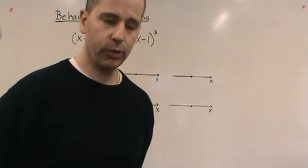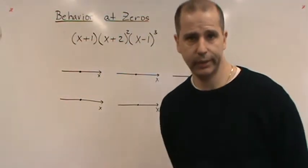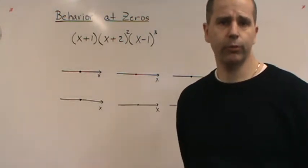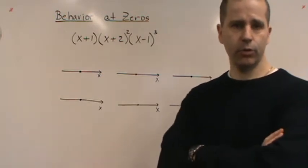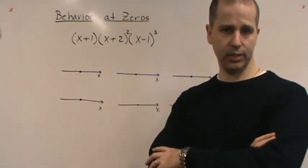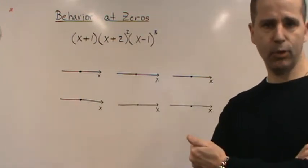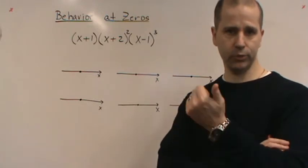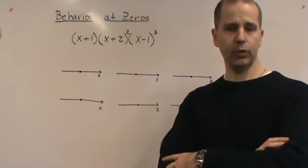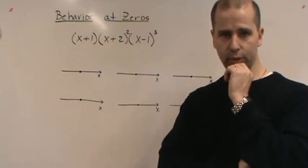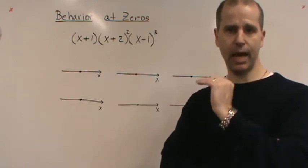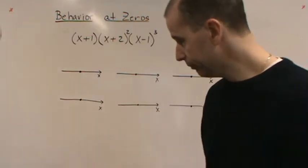Welcome back. Today we're going to cover another topic in this chapter — the topic is behaviors at zeros. We know from previous videos that zeros are where the graph crosses the x-axis, the x-intercepts. We know how to find zeros using factoring, quadratics, the factor theorem, the remainder theorem, and the fundamental theorem of algebra. Now we're interested in what these look like when we graph them — what happens at those zeros.